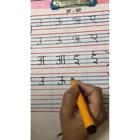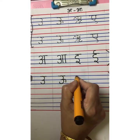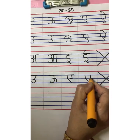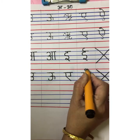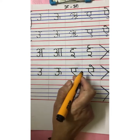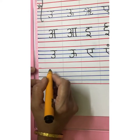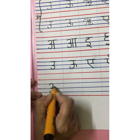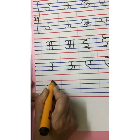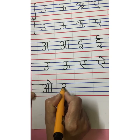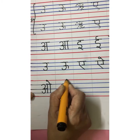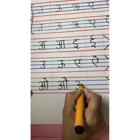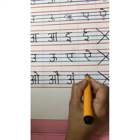We are not going to write Ri. After Bada U we will write E. Then comes A, Aa. After Aa comes O, write O. After O comes Au. After Au comes Ang, and the last swar is Aha.